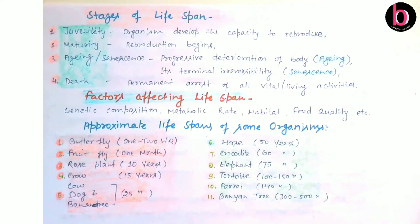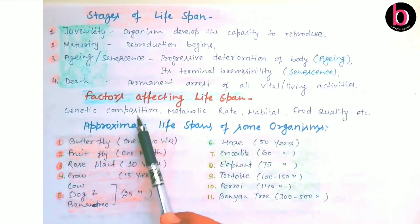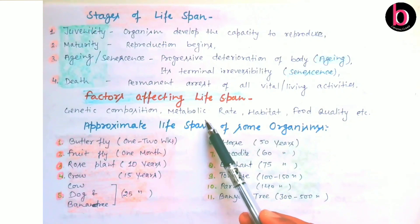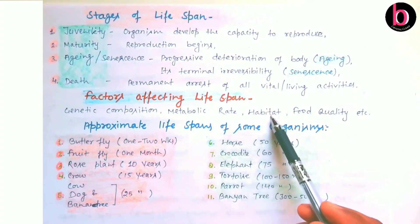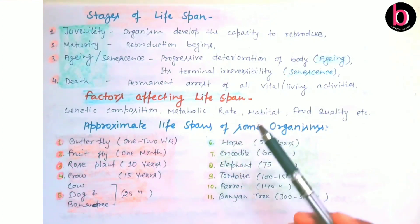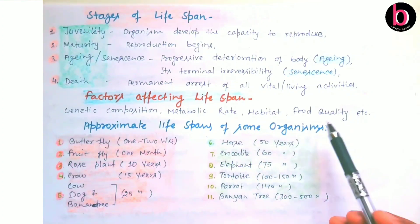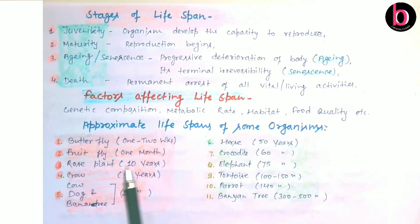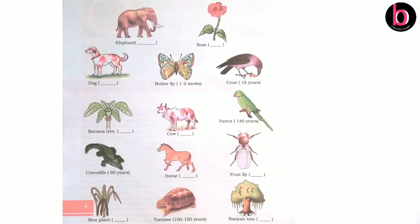Next, factors affecting life span include: genetic composition of the organism, metabolic rate (higher metabolic rate usually decreases life span while slower metabolic rate increases it), habitat conditions (rough or favorable), and food quality. There are many factors, but these are key ones that can increase or decrease the life span of any organism.